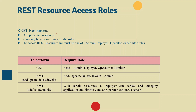It is worth noting that REST resources are protected resources and can be accessed via specific roles. To access REST resources you must be in one of the Admin, Deployer, Monitor, or Operator roles. For GET operations, the Monitor role is sufficient. For POST operations such as add, update, delete, or invoke, you should have the Admin role. For deployment or server start/stop operations, the Deployer or Operator roles are required respectively.